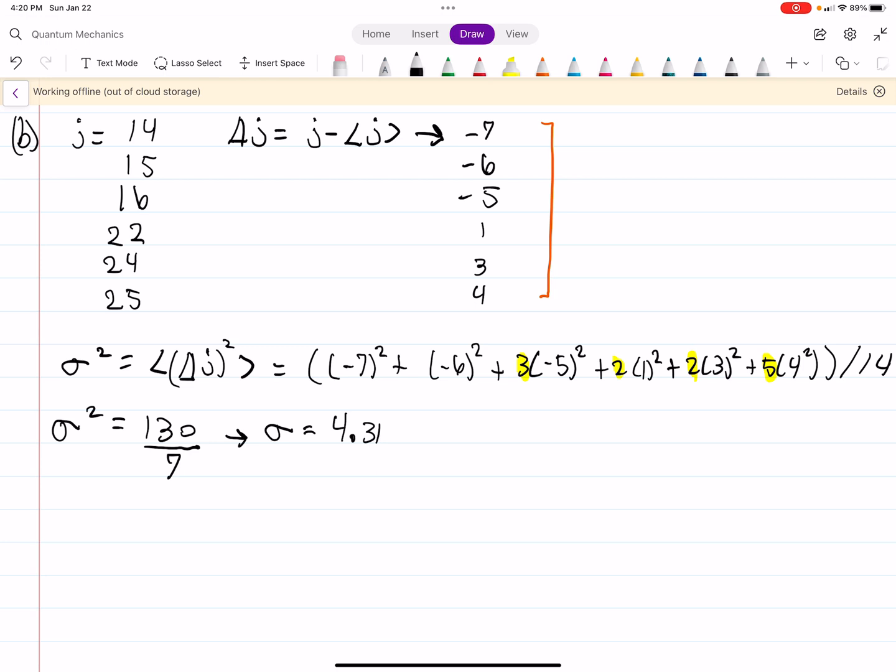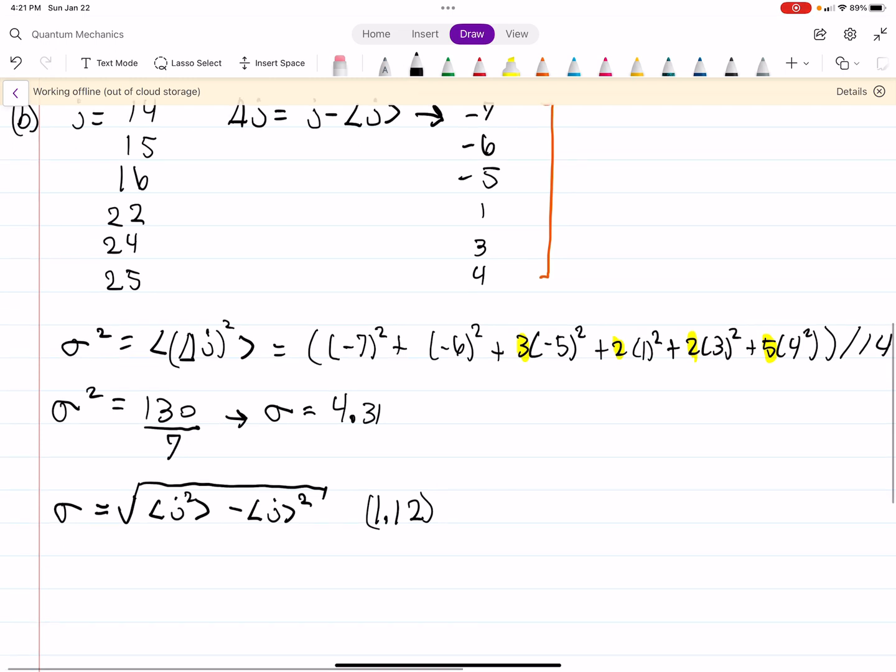There's another way to calculate it using equation 1.12, which is the square root of J squared, the expectation value of it, minus the expectation value of J squared. So this is equation 1.12. And, again, these were values that we calculated in part A. So all you have to do is plug that in.